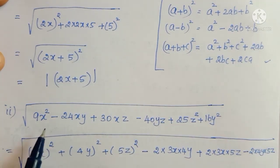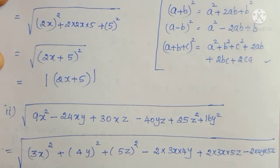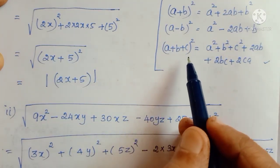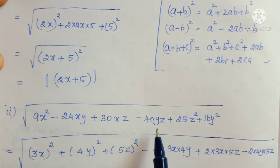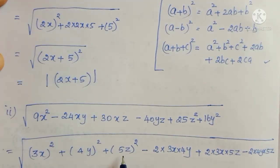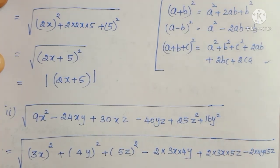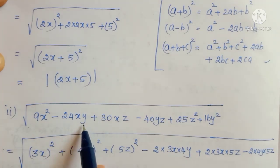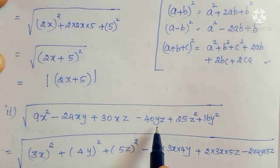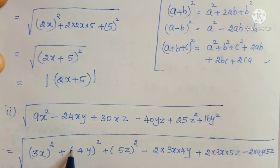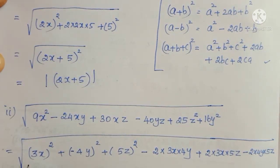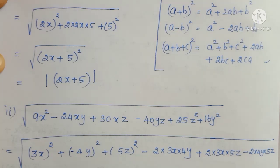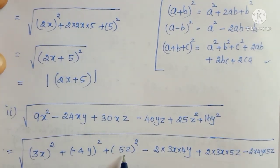Now you will have one question: ma'am, here minus signs are coming. But in the formula a squared plus b squared plus c squared plus 2ab plus 2bc plus 2ca, all three cross terms are positive. But here we have minus 24xy and minus 40yz. The negative sign tells us which variable to take as negative. We identify the common variable in both negative terms — that is xy and yz — the common variable is y. So y gets the negative sign. We write b as minus 4y. Check: 2 into 3x into minus 4y gives minus 24xy, and 2 into minus 4y into 5z gives minus 40yz.